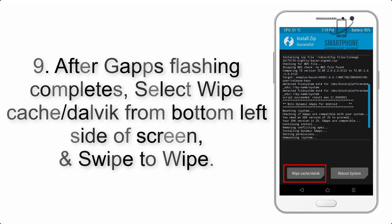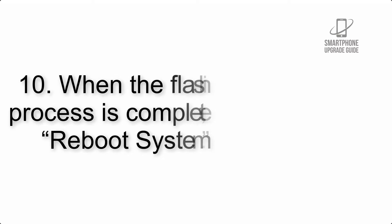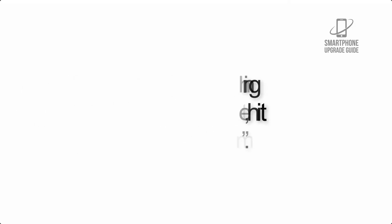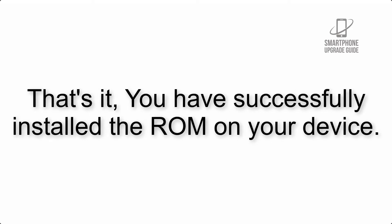Step 9: After GApps flashing completes, select Wipe Cache and Dalvik from the bottom left side of the screen and swipe to wipe. Step 10: When the flashing process is complete, hit Reboot System. That's it — you have successfully installed the ROM on your device.